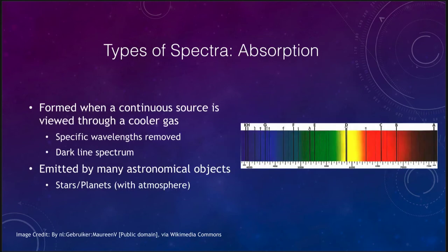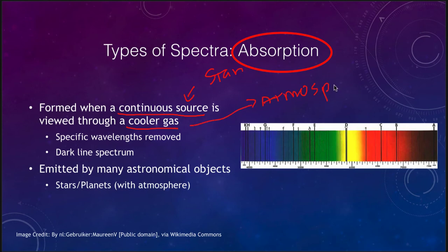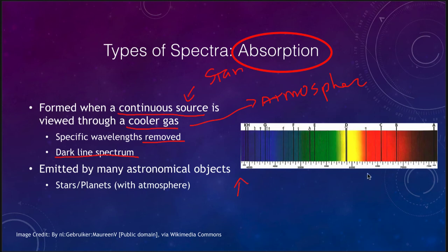The third type is what we call the absorption spectrum, which is actually what we do see with a star when we include its atmosphere. You need a source of a continuous spectrum viewed through a cooler gas — for example, the star itself as the continuous source and the atmosphere of the star as the cooler gas. This is sometimes called a dark line spectrum, where specific wavelengths are removed. We can see the underlying continuous spectrum from violet to red, but with specific lines missing.